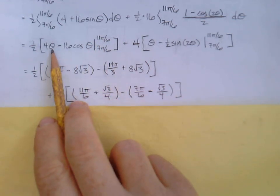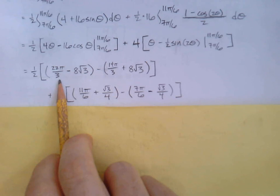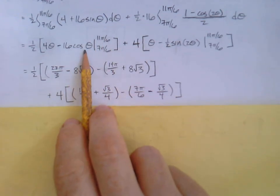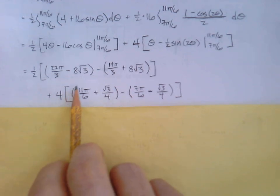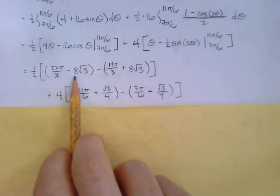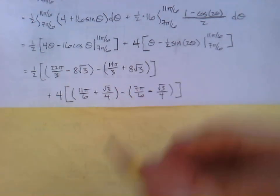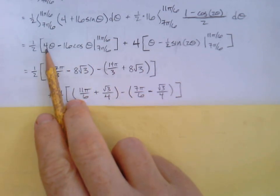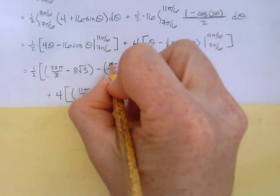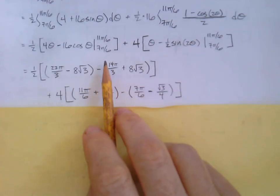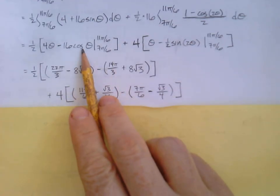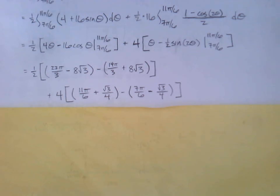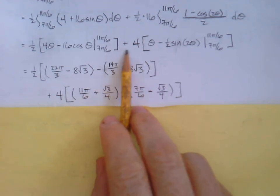Well, 11 pi over 6 times 4. 22 pi over 3. Plugging it in here. Believe that got me root 3 over 2. But then we multiply it by 16. So, 8 root 3. Then plugging in the 7 pi over 6. Well, that gives you times 4 gives you 14 pi over 3. 7 pi over 6 into cos theta gives you negative root 3 over 2. So, times negative 16 plus 8 root 3. Okay. All that's multiplied by the half. Then plus the 4.